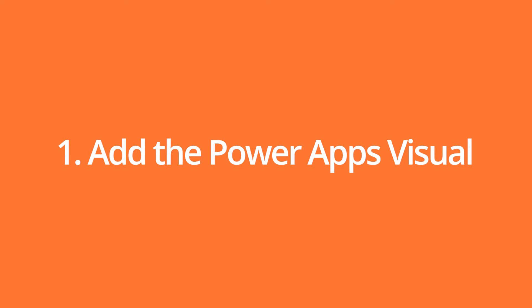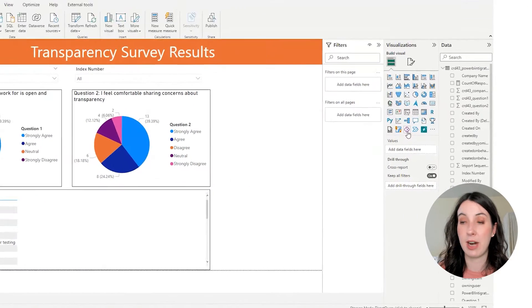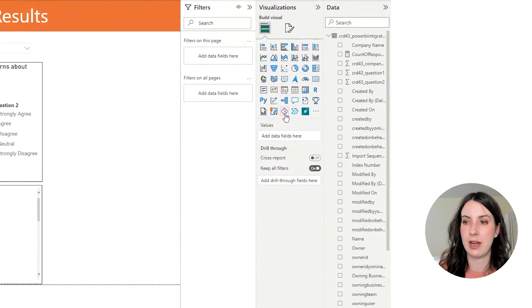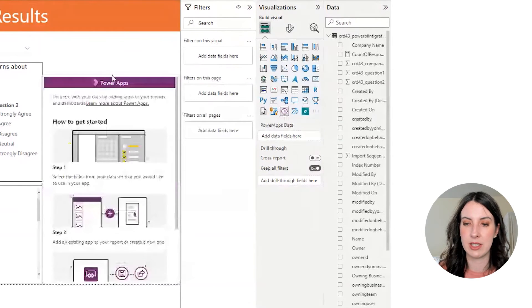Step one is to go over to your visuals pane and select the Power Apps for Power BI visual. Let's put that in there.